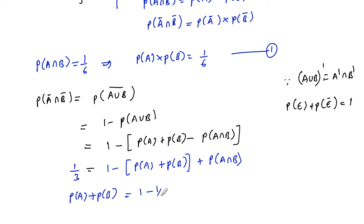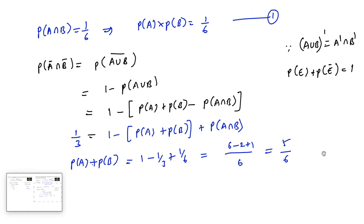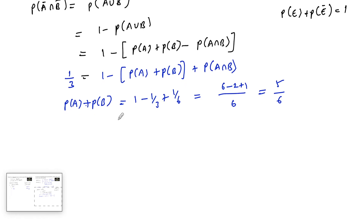Substituting P(A∩B) = 1/6, we get 1/3 = 1 − P(A) − P(B) + 1/6. Taking LCM as 6: 1/3 = (6 − 2 + 1)/6 = 5/6 − [P(A) + P(B)]. Therefore P(A) + P(B) = 5/6. Let us label this as equation 2.